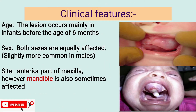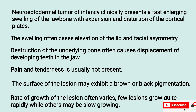Clinical features. Age: it usually occurs between six months to one year of age in children. Sex: both male and female are affected equally. Site: this lesion mostly arises from the anterior part of the maxilla.